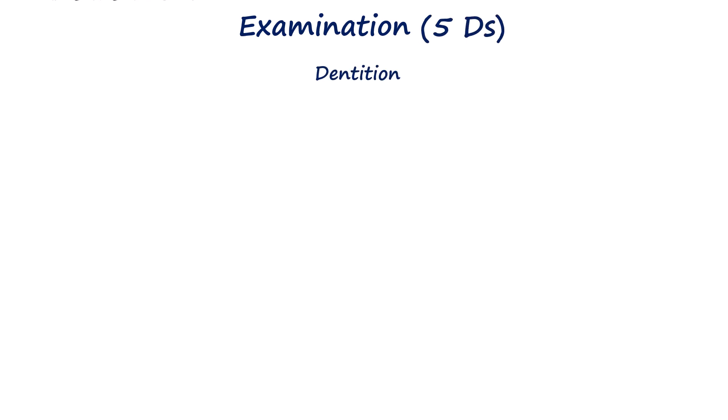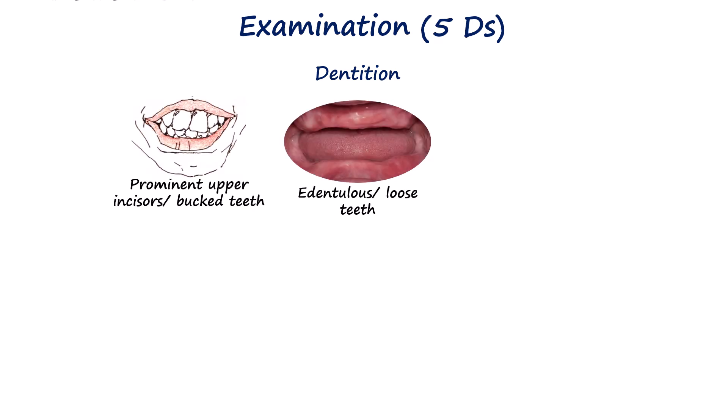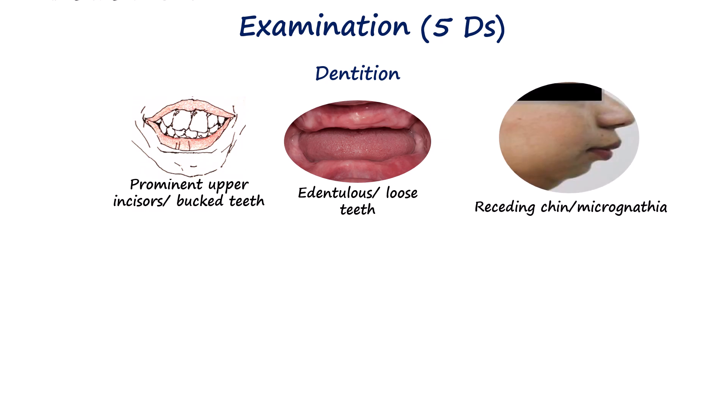In general examination, we basically examine the airway from the mouth to the trachea. An easy way to remember this is by using the mnemonic 5D. The first D is dentition. Here we look at the patient's teeth and jaw structure. Prominent upper incisors, loose teeth, edentulous gums, or a receding chin can all make bag-mask ventilation and laryngoscopy more difficult.